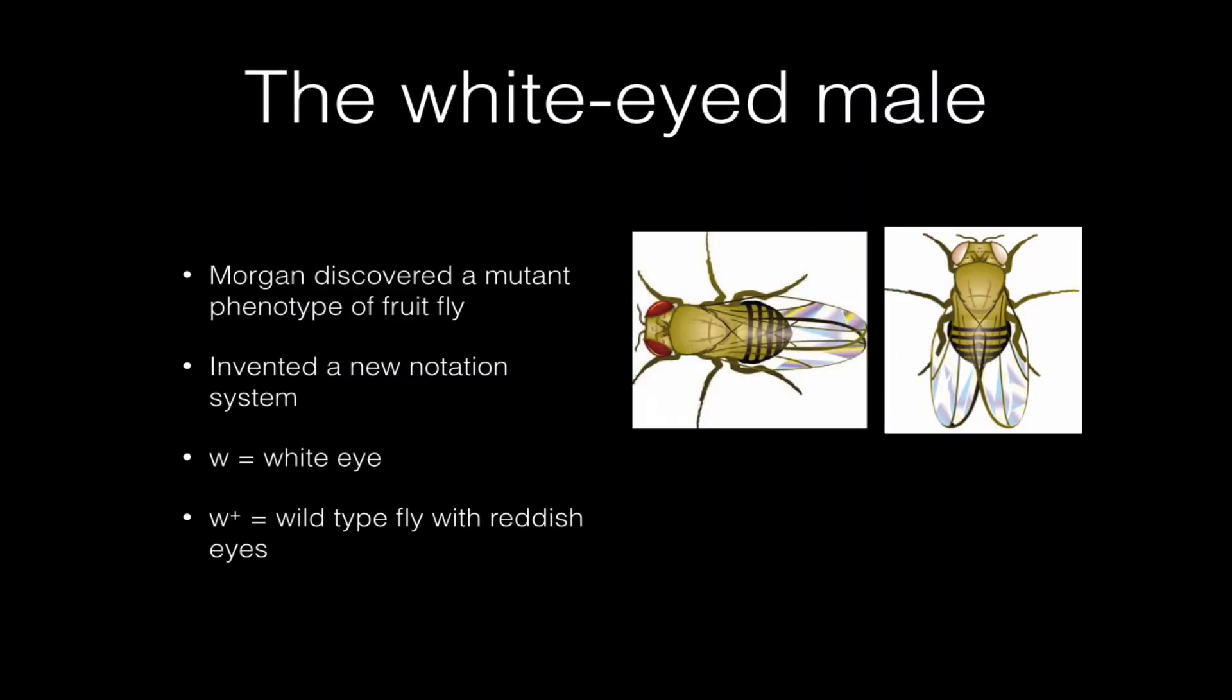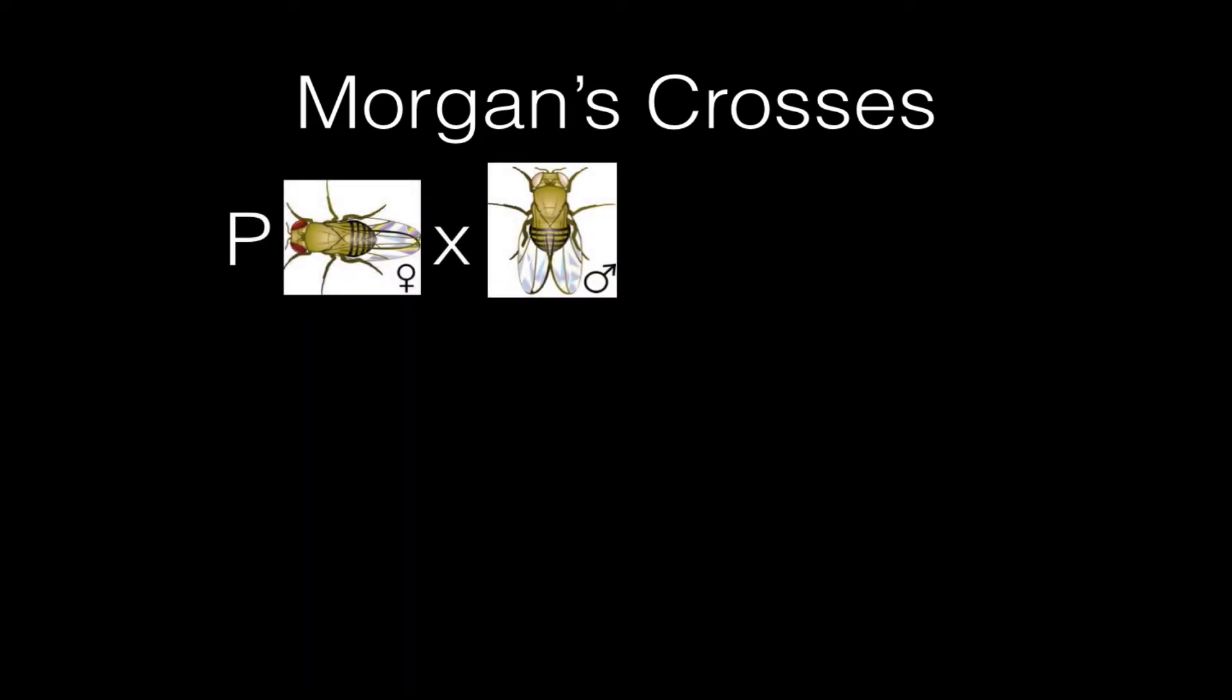And Morgan discovered this phenotype in fruit flies, and he invented a new notation system to talk about this. He's going to use a little w to represent the white-eye gene or allele, and we're going to use a w with a superscript plus on it, w plus, to represent the wild-type fly with reddish eyes. So we're going to get away from the capital letters and lowercase letters that Mendel is associated with. And Morgan did some crosses with his little white-eyed male fruit fly. And the fact that that little white-eyed fruit fly is male is going to be important in a few minutes.